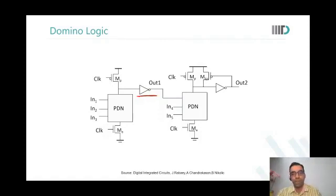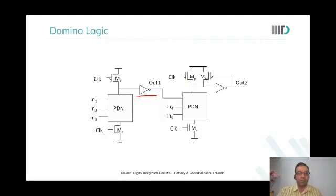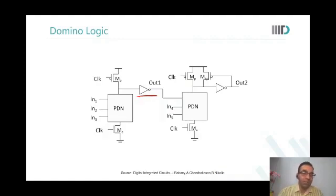A student asks about preserving the total input-to-output logic in domino. Suppose you are implementing an SOP like AB + CD — the first stage is an AND gate, the next is OR gate. If you place an inverter in between, you need to apply De Morgan's theorem and do bubble pushing to get a NAND representation. The instructor says that's a simpler part — the other challenges discussed are more complex; bubble pushing is straightforward logical transformation.